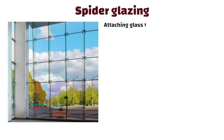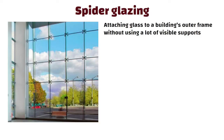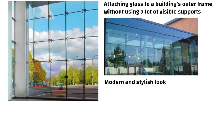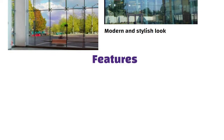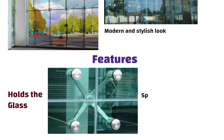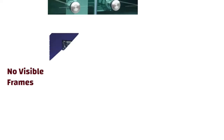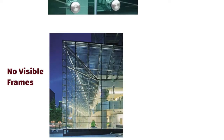Spider glazing. Spider glazing is a way of attaching glass to a building's outer frame without using a lot of visible supports. It makes the glass look like it is hanging in the air, giving the building a modern and stylish look. It is like a spider's web that holds the glass in place on the building's front. Unlike regular windows with big frames, spider glazing doesn't have those, so you can see more of the building through the glass.